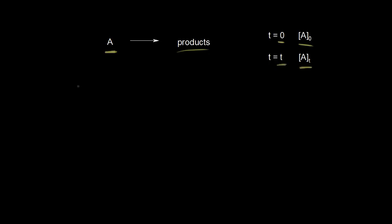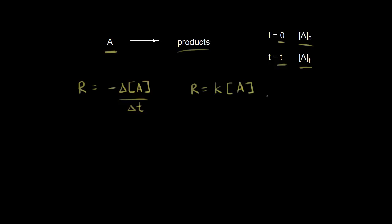If we're expressing the rate of our reaction, we know we can do that in a couple different ways. We can say that the rate is equal to the negative change in the concentration of A over the change in time. We can also say that the rate is equal to the rate constant K times the concentration of A. And since this is second order in A, this is the concentration of A to the second power.